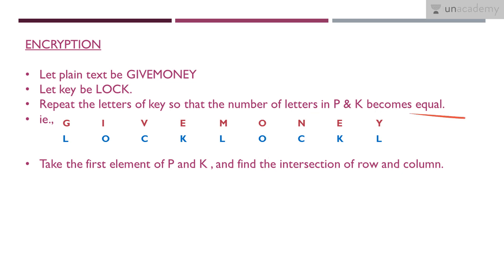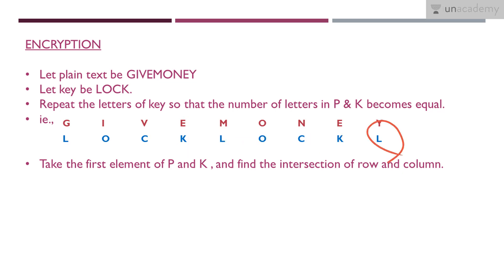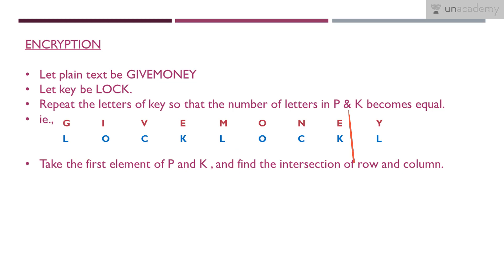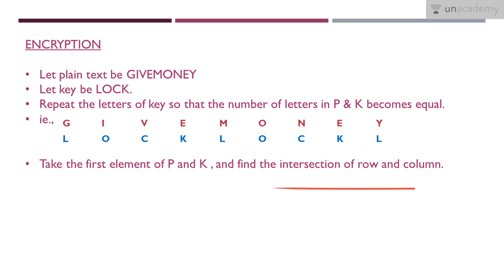So plain text is G, I, V, E, M, O, N, E, Y. I write the key as L, O, C, K, then again L, O, C, K, and one more L is left to match the 9th letter. So the repeated key is L, O, C, K, L, O, C, K, L. It's a cyclic repetition and the length is now equal.